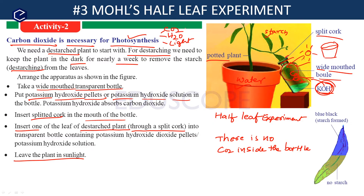We said photosynthesis needs three things: carbon dioxide, water, and light. Here we are providing water and light, but carbon dioxide is not provided. Let us see what happens.